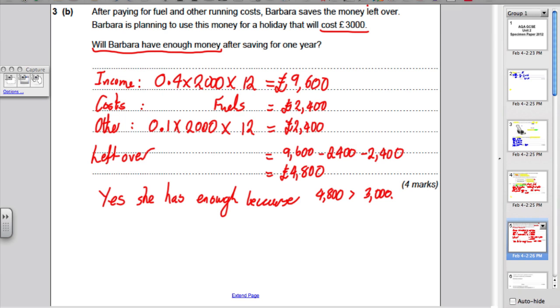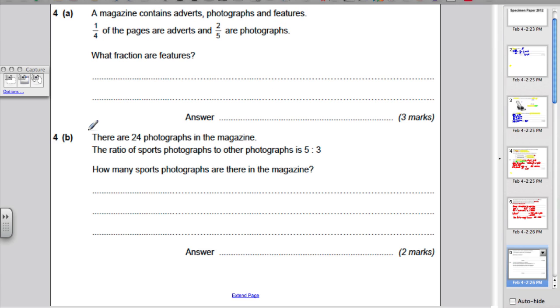OK, let's move on to the next question, question 4. A magazine contains adverts, photographs, and features. A quarter of the pages are adverts, two-fifths are photographs, and it's asking you, what fraction are features? Well, if the magazine just contains these three things, they must total, the total must be one.